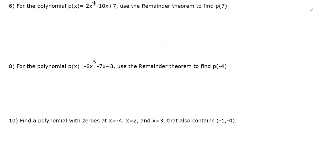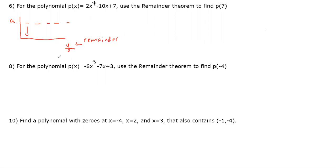Now we'll start looking at synthetic division. Question 6: for the polynomial P(x) = 2x⁴ − 10x + 7, use the remainder theorem to find P(7). The remainder theorem says that after synthetic division by (x − a), the remainder equals the value of the polynomial evaluated at a.